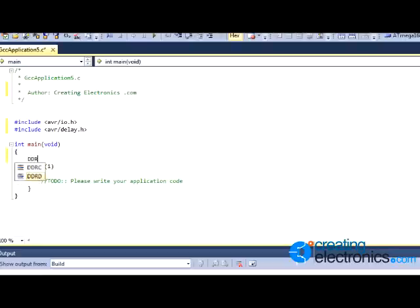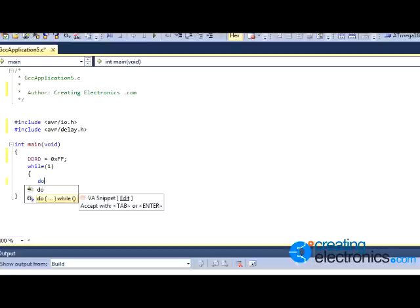Just before the while(1), we want to type DDRD = 0xff; and that's just defining port D as an output port. That's where we've connected our LED to by putting it on pin 2.